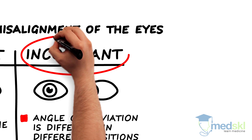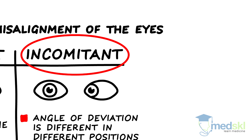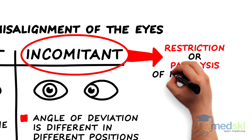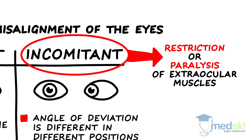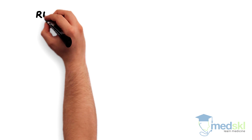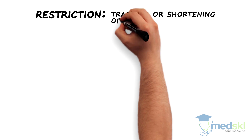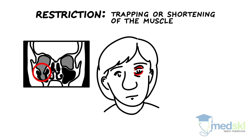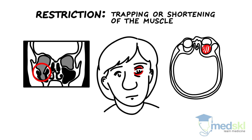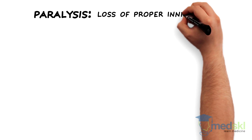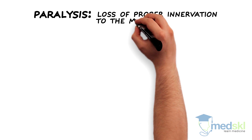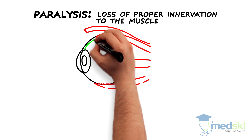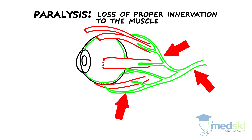Incomitant strabismus is a worrisome sign and is something that you cannot afford to miss, as it may be caused by either restriction or paralysis of the extraocular muscles. Restriction, or trapping or shortening of the muscle, can be due to ocular trauma, orbital inflammation, or orbital tumour. Paralysis, or loss of proper innervation to the muscle, can be due to one or a combination of the cranial nerves not working properly.